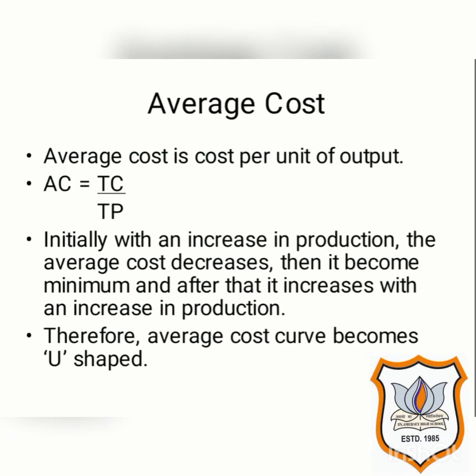Here also, initially with an increase in production, average cost decreases, then it becomes minimum, and after that it increases with an increase in production. This is one of the reasons why the shape of the average cost curve is U — capital alphabet U.